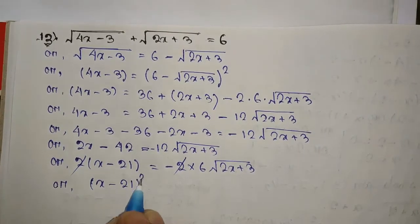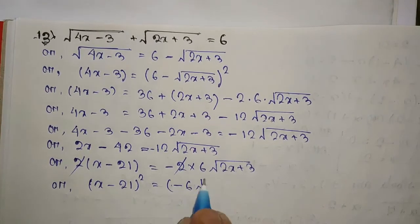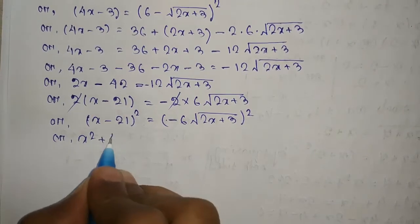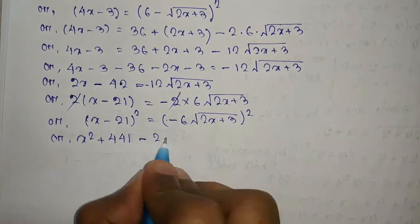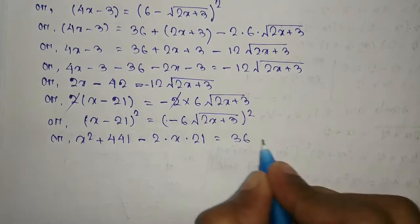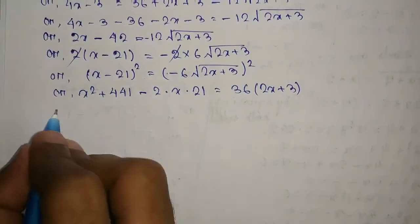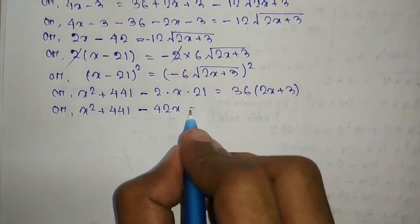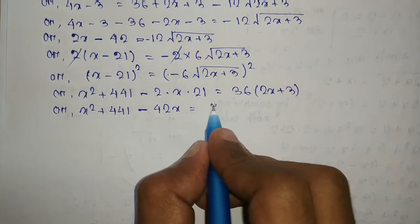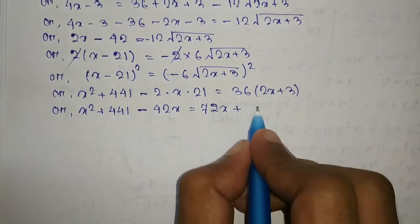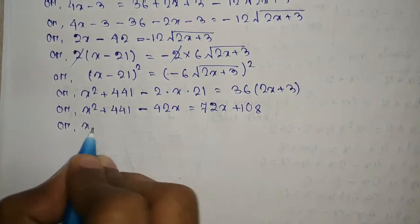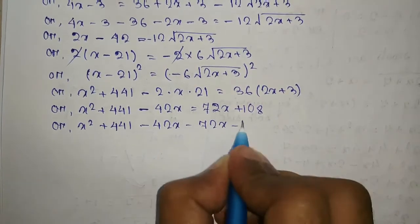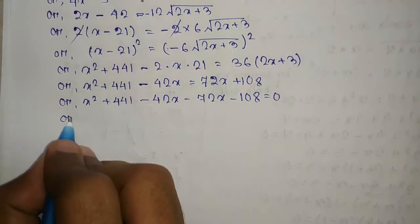(x minus 21) whole square equals 36(2x + 3). Expanding using a² + b² minus 2ab: x² + 441 minus 42x equals 72x + 108. Rearranging: x² + 441 minus 42x minus 72x minus 108 equal to 0, giving x² minus 114x plus 333 equal to 0.